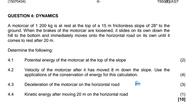We are given the following questions. First, determine the potential energy of the motor car at the top of the slope. Second, determine the velocity of the motor car after it has moved 8 meters down the slope, using the application of the conservation of energy. Third, determine the deceleration of the motor car on the horizontal road. Fourth, determine the kinetic energy after moving 20 meters on the horizontal road.